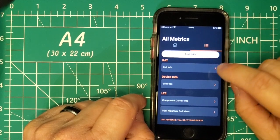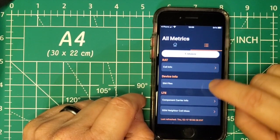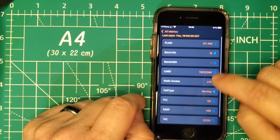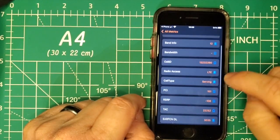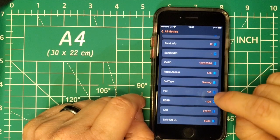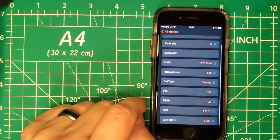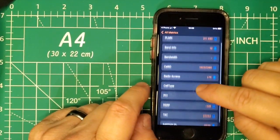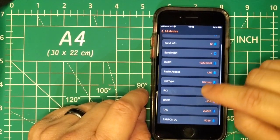If we click on this, we have some cell information: cell ID, cell type, PCI, what sector you're on on the tower, PLMN, band info.